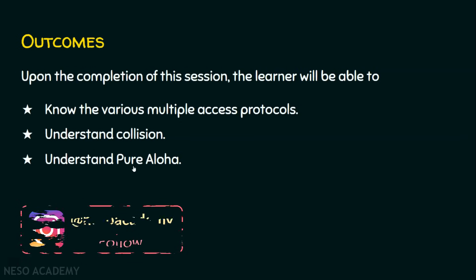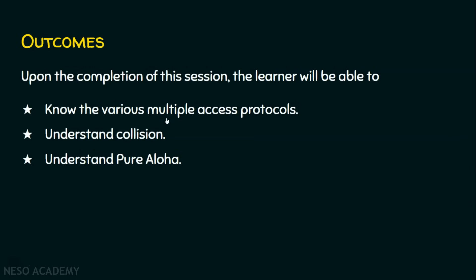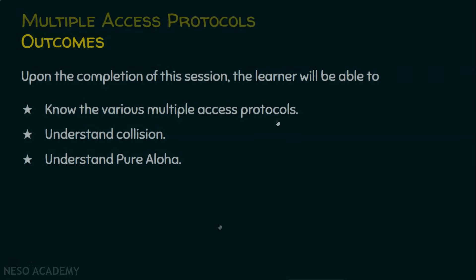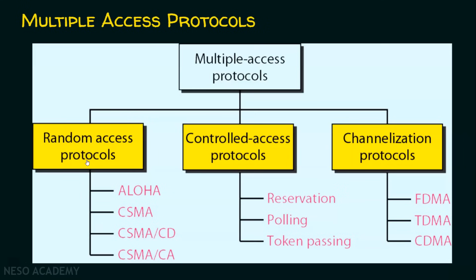Before going into the collision and pure aloha, let's know the various multiple access protocols. The multiple access protocols are of three types: number one, random access protocols; number two, controlled access protocols; and number three, channelization protocols. In today's lecture, we are going to see the aloha protocol. The title mentions pure aloha and here it is mentioned simply as aloha — we will deal with that shortly.